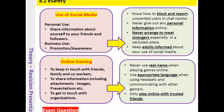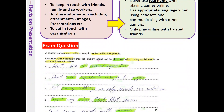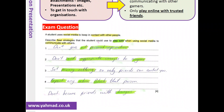Here is an exam question: 'Describe four strategies that a student could use to stay safe when using social media to communicate with others.' The answers are: don't give out personal information, don't send inappropriate images to anyone, set privacy settings so only friends can contact you, and report any abuse and block that person. Also, don't become friends with strangers.